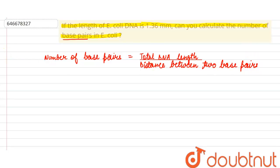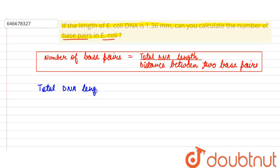So this is the formula. Let's put the values in it to calculate the number of base pairs found in E. coli. First of all, total DNA length given in the question is 1.36 mm, which is equivalent to